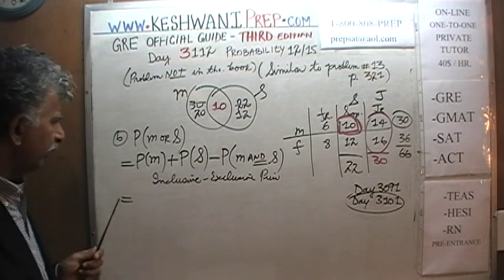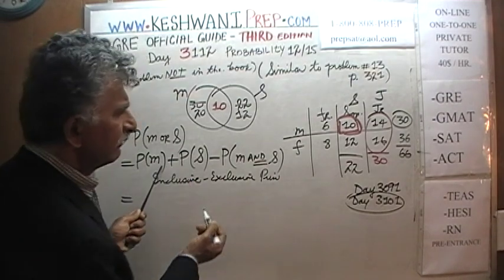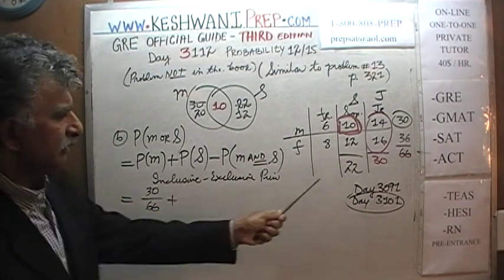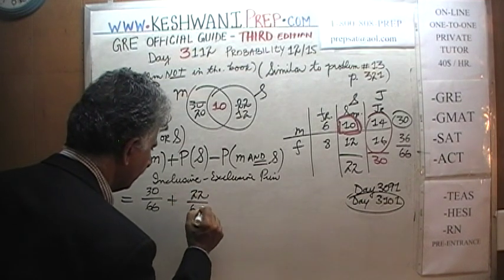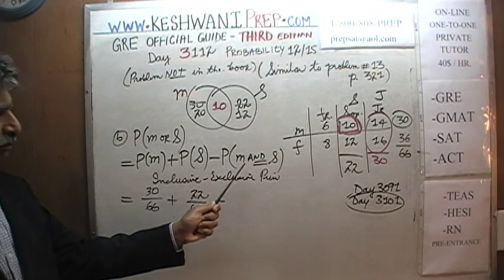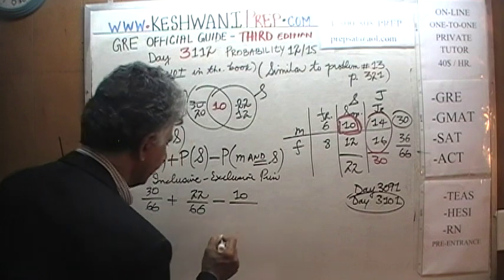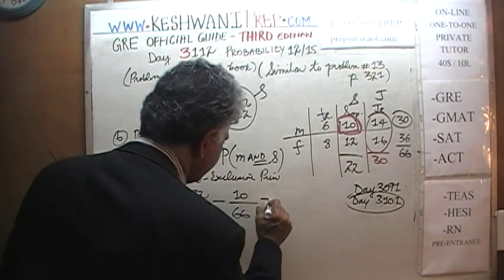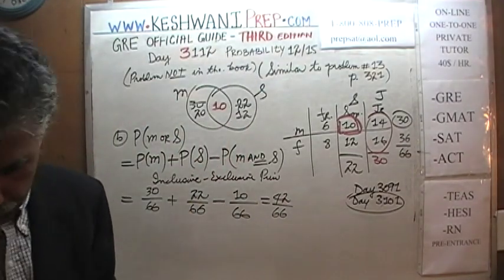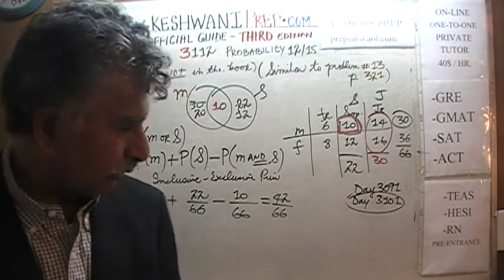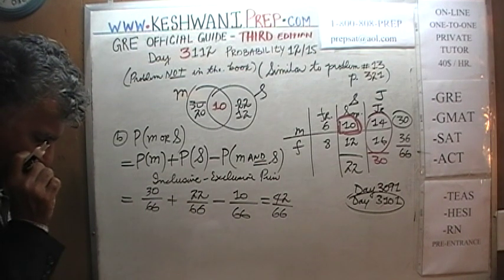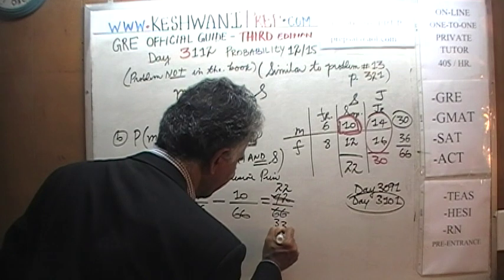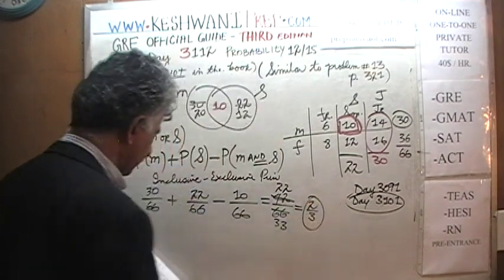So: probability of picking a male is 30/66. Probability of picking a sophomore is 22/66. We subtract the probability of picking someone who is both male and a sophomore, which is 10/66. That gives us: 30/66 + 22/66 − 10/66. 30 minus 10 is 20; 20 plus 22 is 42. So the answer is 42/66.